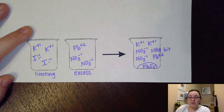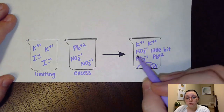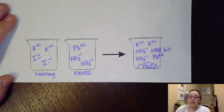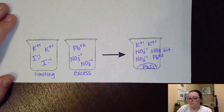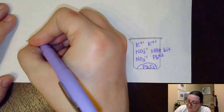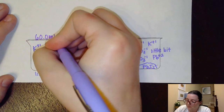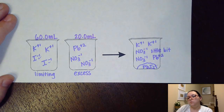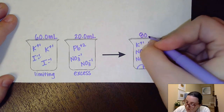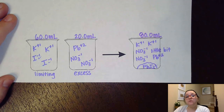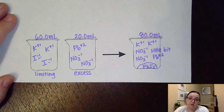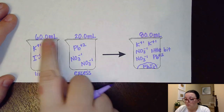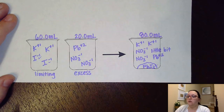Our job is to figure out the concentrations of these ions in the final solution. There's one other thing to address: potassium iodide had 60 milliliters of solution, and lead nitrate had 20 milliliters. When I combine those two solutions, my final volume is going to be 80 milliliters. I have to be very careful with concentrations to make sure I'm using that 80 milliliter total volume, not the molarities in the smaller individual volumes.